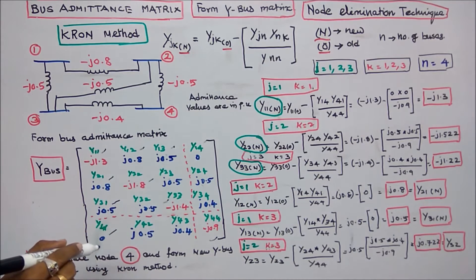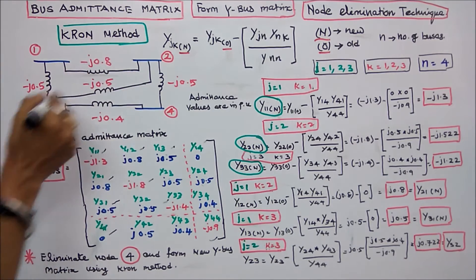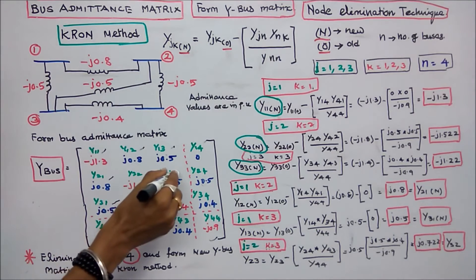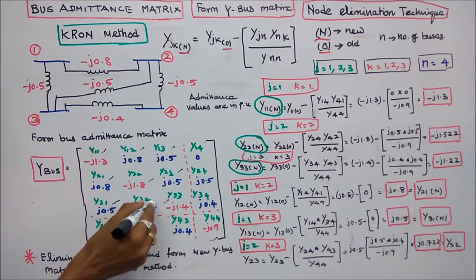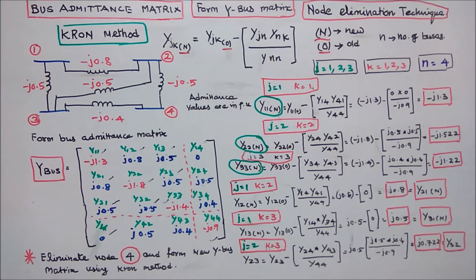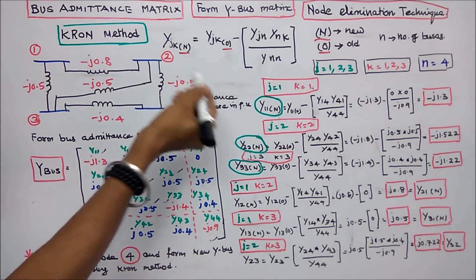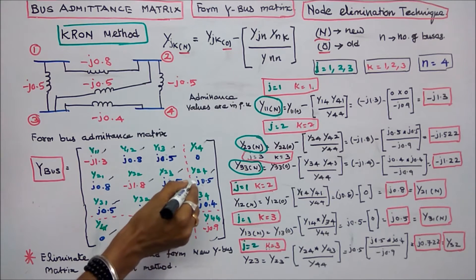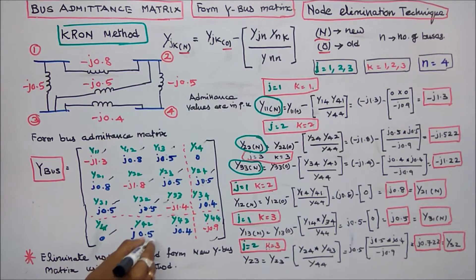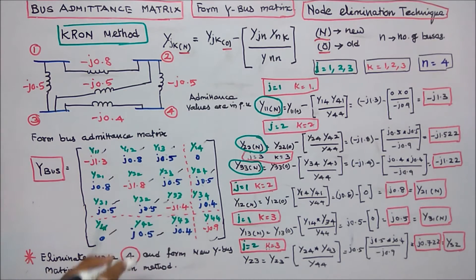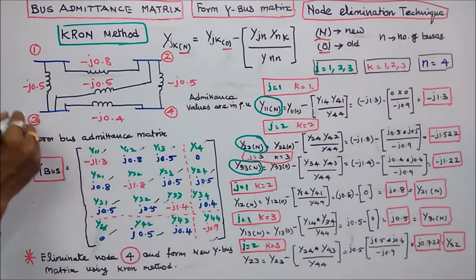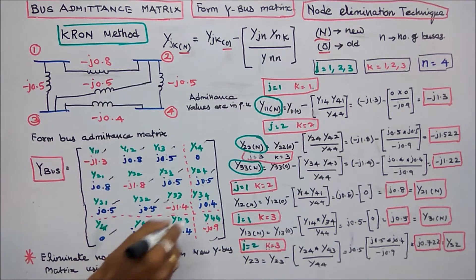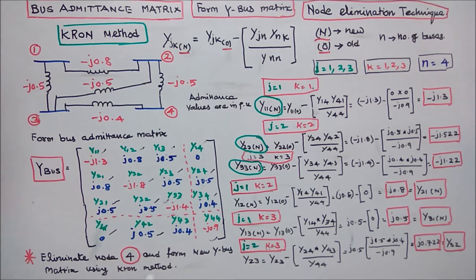Next, Y23 equals minus of minus j0.5, giving plus j0.5, and Y32 equals plus j0.5. Y24 equals minus of minus j0.5, giving plus j0.5, and Y42 equals plus j0.5. Y34 equals minus of minus j0.4, giving plus j0.4, and Y43 equals plus j0.4.